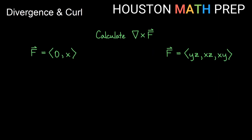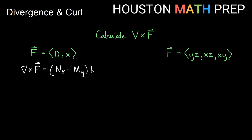Let's calculate del×F for our first vector field F = (0, x). For two-dimensional curl, del×F = (nx − my)·k̂. Here m = 0 and n = x, so nx is the partial derivative of x with respect to x = 1, and my is the partial derivative of 0 with respect to y = 0. So we get (1 − 0)·k̂ = k̂. The curl of this vector field is simply k̂.